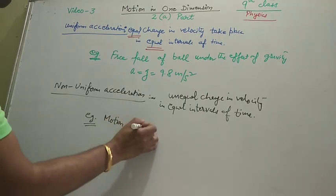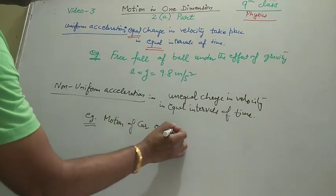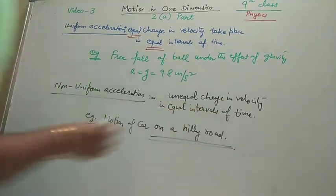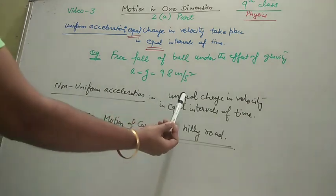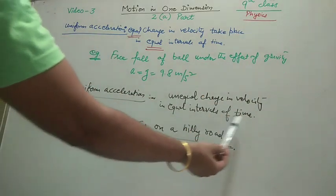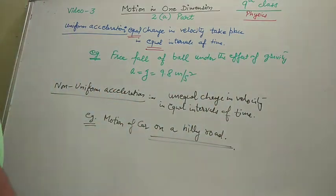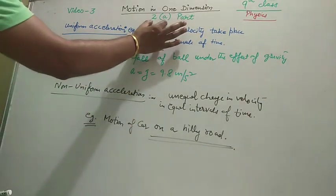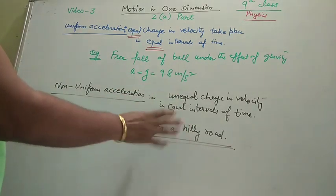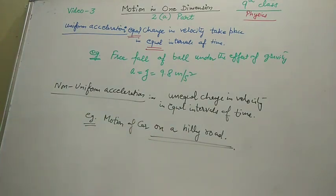An example of non-uniform acceleration is the motion of a car on a hilly road or in a crowded market, where its velocity changes unequally in equal intervals of time. With this, the 2nd A part of Chapter 2 — Motion in One Dimension — is over. You can watch this video again and again to revise the content, and also read from the book to get mastery on this part. Thank you.